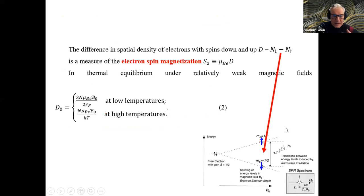The difference in spatial density of electrons with spin up and down is a measure of the electron spin magnetization, which is shown here. It can be calculated in thermal equilibrium both for classical statistics at high temperatures related to temperature, or at low temperatures related to the Fermi energy.